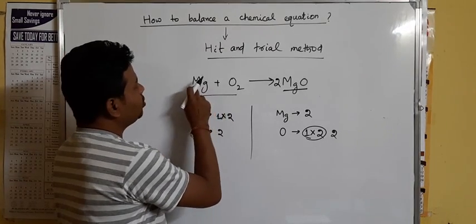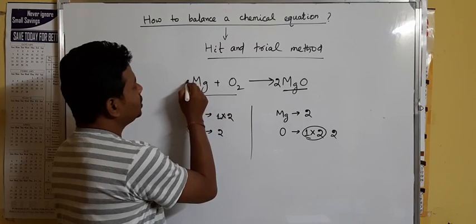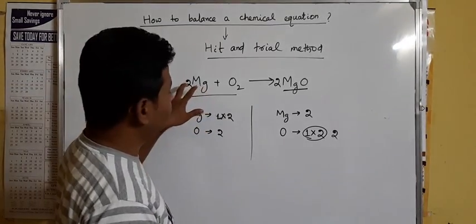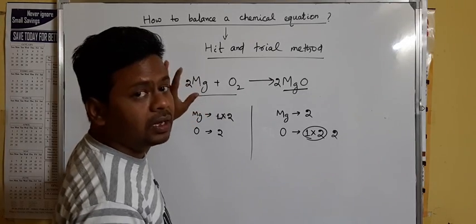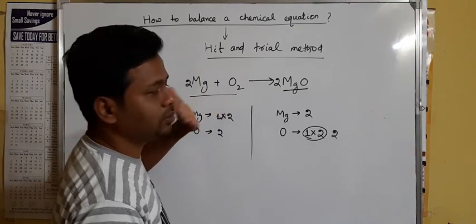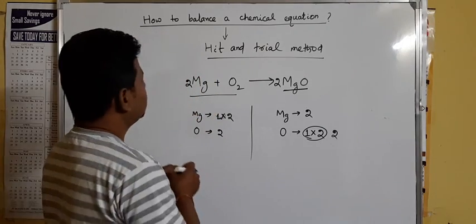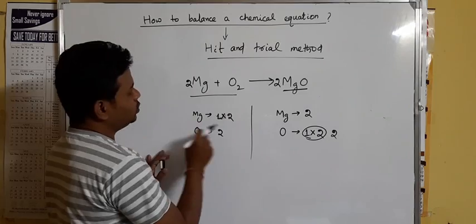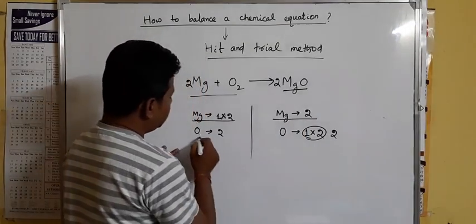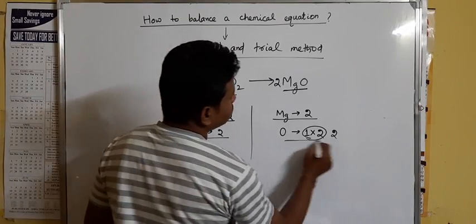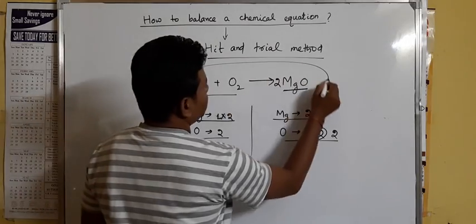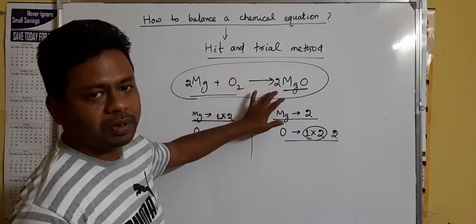If you multiply 2, you have to also write 2 in the equation. Remember, you have to multiply to the left side of the element or compound, not the right side, not in between. So here magnesium becomes 2. If you compare now: magnesium here is 2, magnesium on the product side is also 2. Oxygen atom on the reactant side is 2, and on the product side also 2. So now this equation can be called a balanced chemical equation.